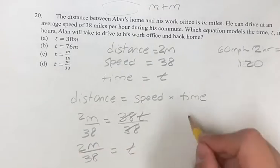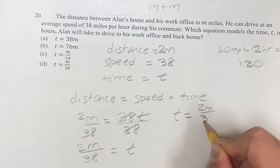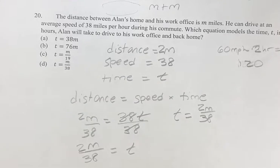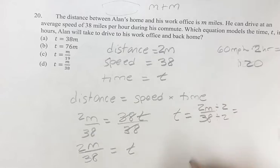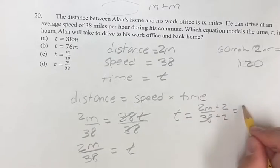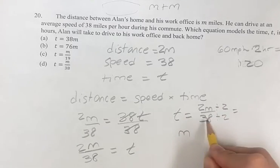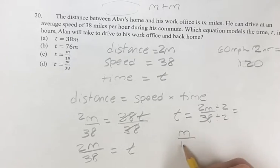Okay, so we have to make sure to have t is equal to 2m over 38. Still doesn't look like anything. That's because these can be both divided by 2. To make it a little bit more simple, 2 divided by 2 is 1. So t equals m divided by 38 divided by 2 is 19.